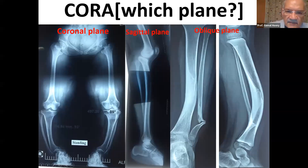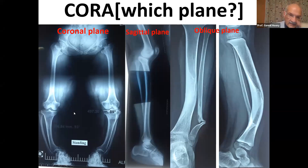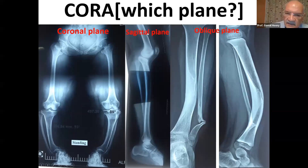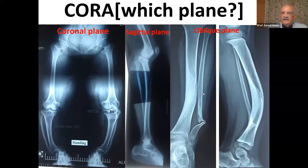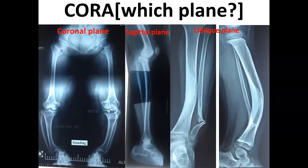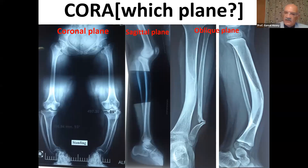The CORA can be in any plane. We have a coronal plane — you can see the coronal plane in the AP view. This is the AP view showing the coronal plane. This is the sagittal plane, seen in the lateral views. The varus or valgus deformity is in the coronal plane. If you have a deformity in the lateral x-ray, that's the sagittal plane — recurvatum or pro-recurvatum. And if you have the deformity in both the AP and lateral, it means it's in the oblique plane, in between the coronal and the sagittal plane.